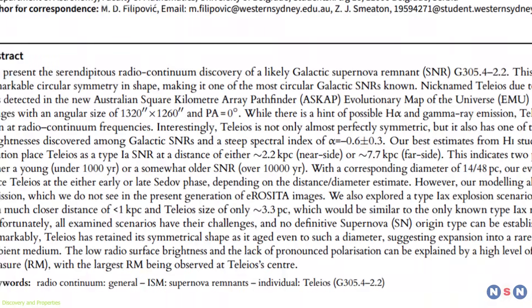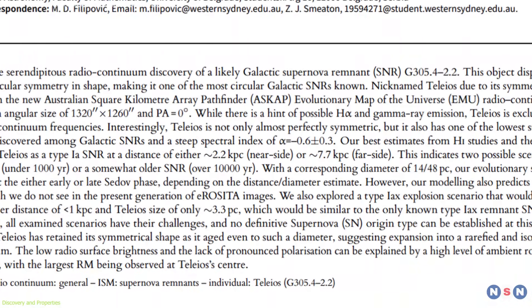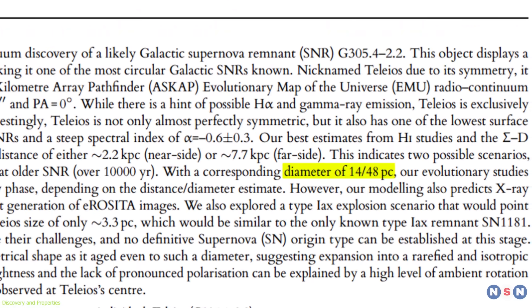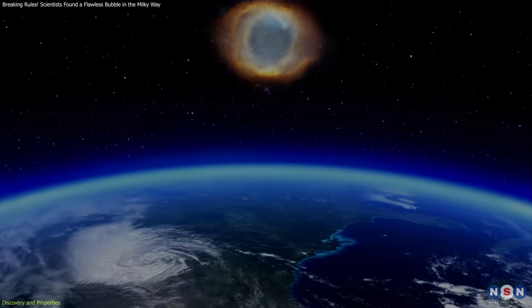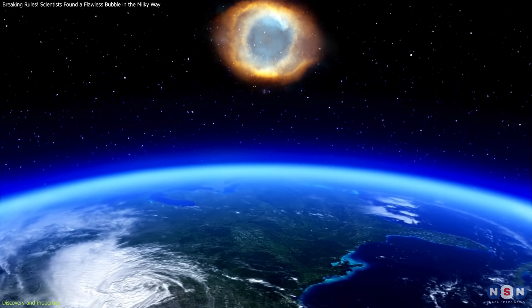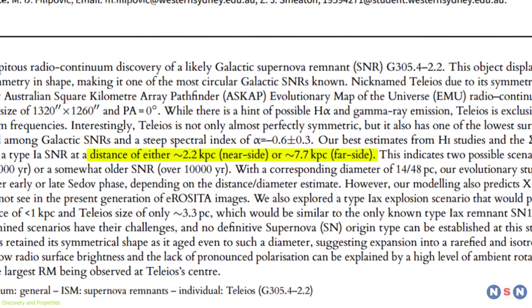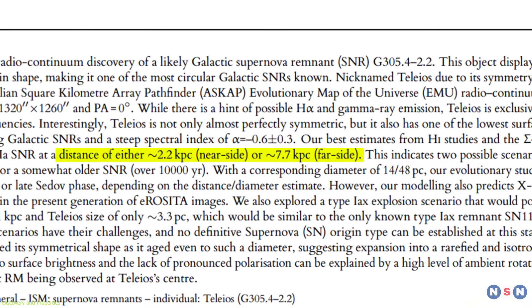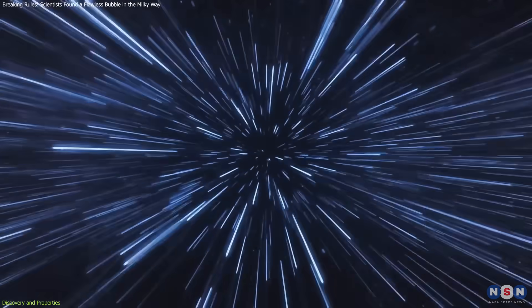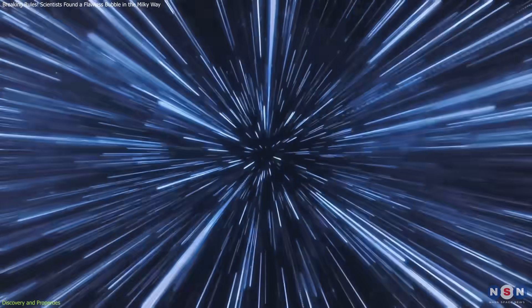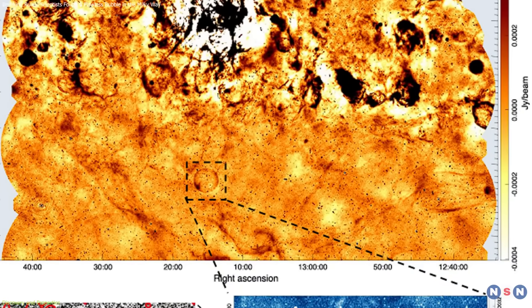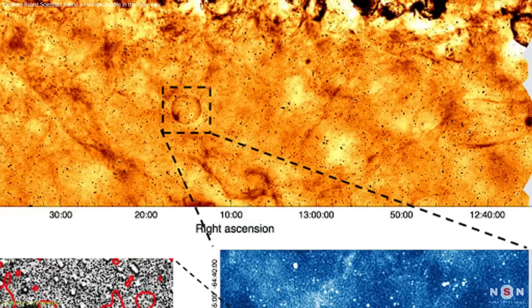Initial analysis showed that the remnant's diameter falls between 45 and 150 light-years, depending on its exact distance from Earth. Estimates range from about 2,200 to 7,700 parsecs, roughly 7,000 to 25,000 light-years. Despite that uncertainty, one fact stood out: its geometry.